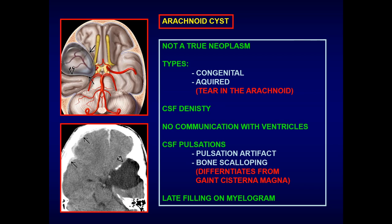The two key differentiators from epidermoid are: the dirty CSF sign on FLAIR — which is absent in arachnoid cyst, which remains completely dark on FLAIR following CSF intensity — and restricted diffusion, which is present in epidermoid but absent here. The arachnoid cyst is dark on diffusion sequences with CSF intensity on all sequences. There may also be a pulsation artifact in the phase-encoding direction.